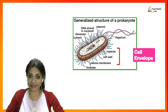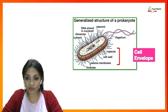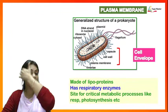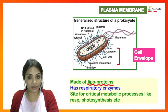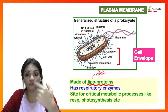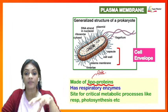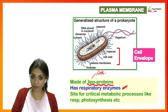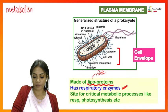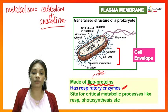The innermost layer of the cell envelope is the plasma membrane. The plasma membrane of a prokaryotic cell is made up of lipoproteins — a combination of fats (lipo) and proteins — just like the plasma membrane of eukaryotic cells. It also has respiratory enzymes which help in metabolic activities: metabolism being catabolism (breaking down) plus anabolism (building up).